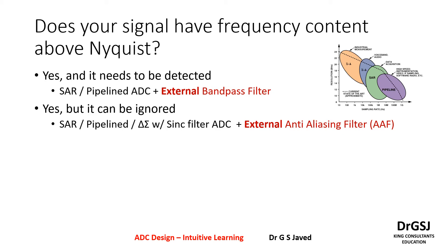If there is frequency content above Nyquist but it can be ignored, then the easiest thing to do is use SAR or pipeline. Along with that, you can use the delta sigma ADC at higher resolutions, but you need to use a filter. The filter can be within the sigma delta ADC — it could have a sync filter, where you have nulls present at appropriate filter frequency multiples or harmonics. Along with that, you will need an external anti-aliasing filter to avoid signal folding, so that the high frequency signal does not get aliased onto the low frequency signal and form a DC bias.